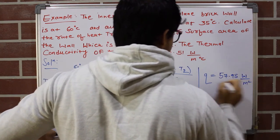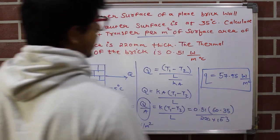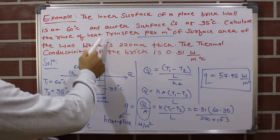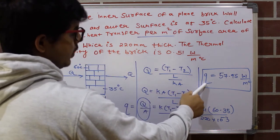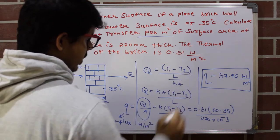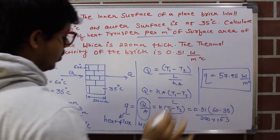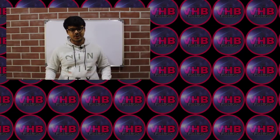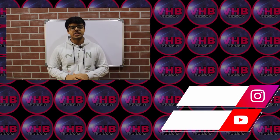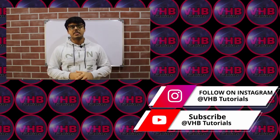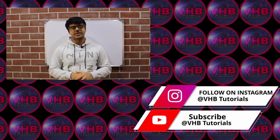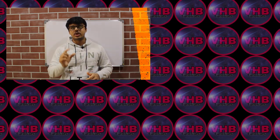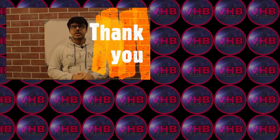Calculating this, we get q = 57.95 W/m². This is the rate of heat transfer per meter square of surface area, which is the heat flux. That's all — I hope you enjoyed this lecture. If you have any doubts, please ask in the comment section and subscribe for more educational videos. In the next video we will see heat conduction through composite walls.